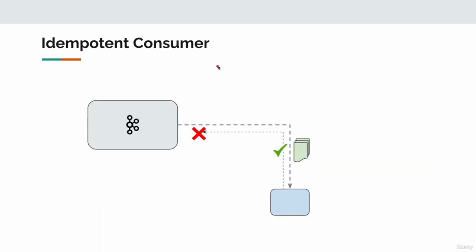In this lecture, we are going to talk about idempotent consumer. In the previous lecture, we were talking about idempotent producer. There is no property called enable idempotent consumer. As a consumer application, we ask for messages, Kafka broker gives the messages, we process them, we send acknowledgement, but somehow it did not reach the broker. If you ask for messages one more time, there is a very good chance Kafka broker will send those same messages back to us. Could I not be charging my users one more time if these are credit card events?